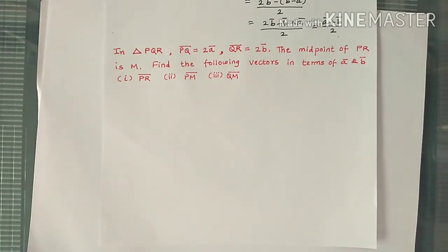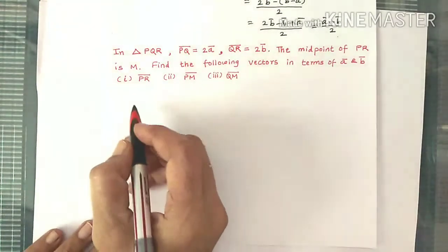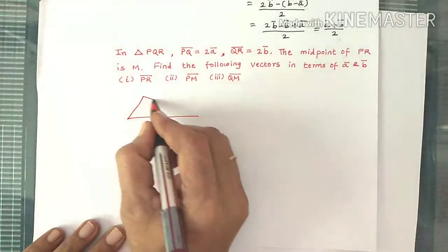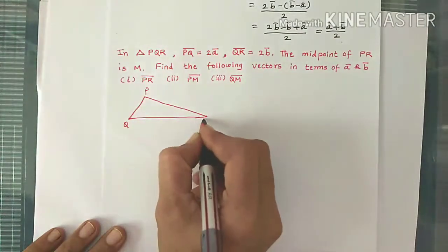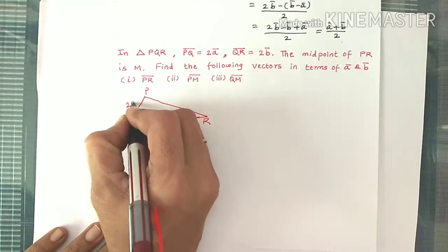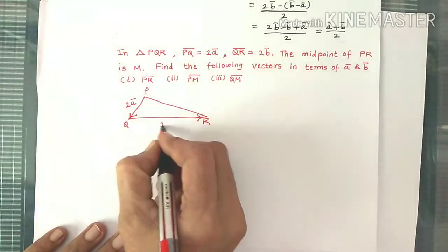Now consider this question. In a triangle PQR, PQ bar equals 2A bar, QR bar equals 2B bar, midpoint of PR is M. Find the following vectors in terms of A bar and B bar: PR bar, PM bar, and QM bar. Let's draw the diagram — this is triangle PQR. PQ bar is 2A bar, and QR bar is 2B bar. Midpoint of PR is M, which means PM equals MR.